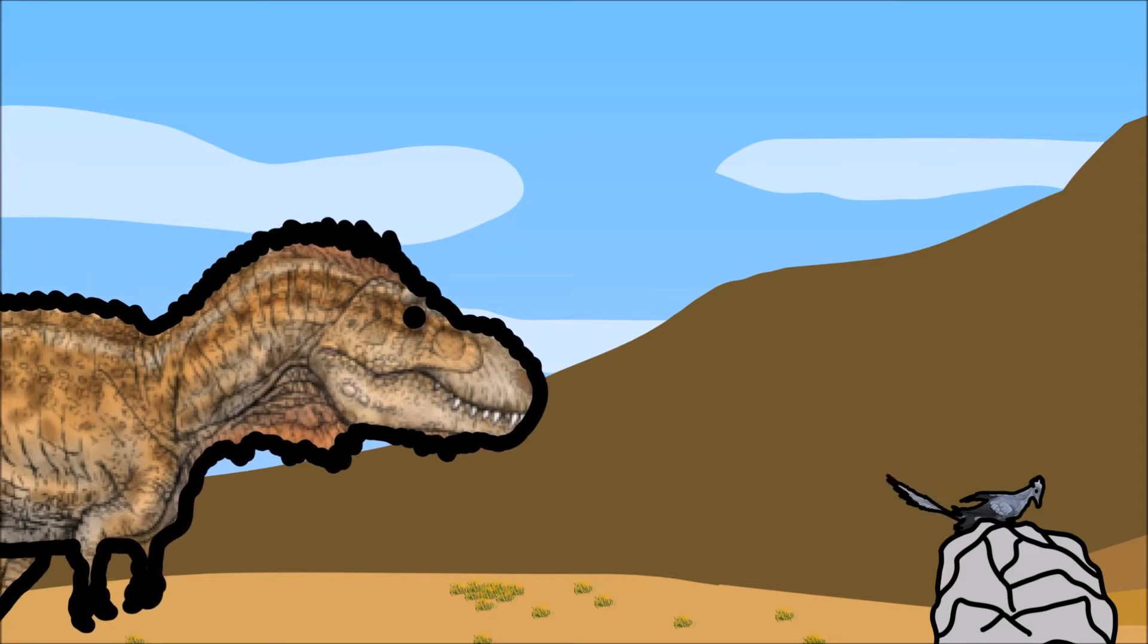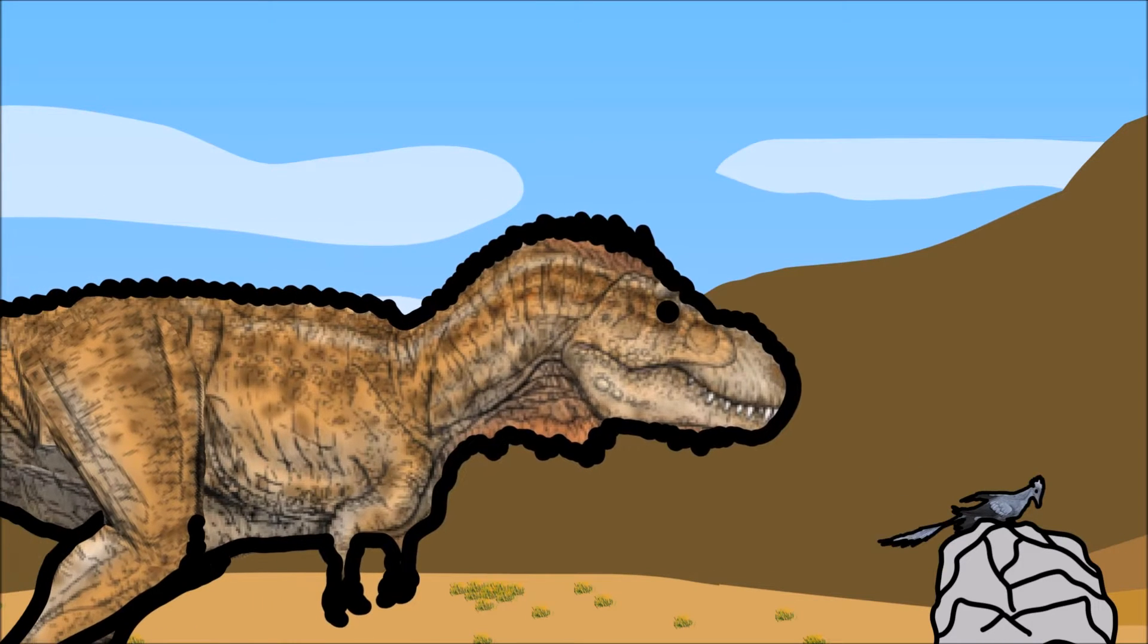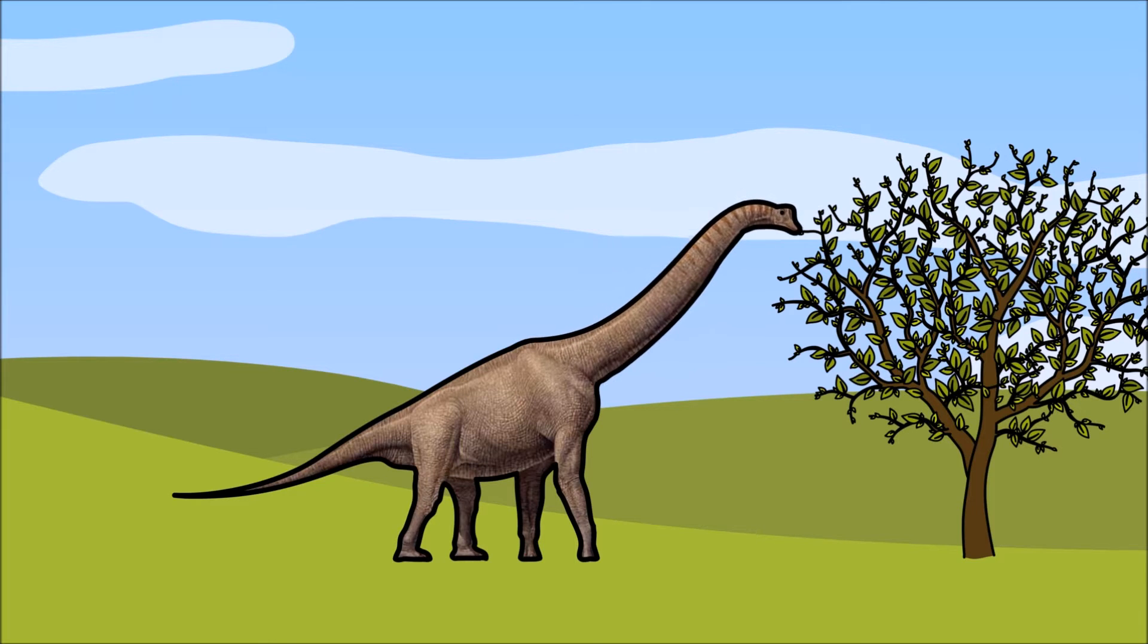Dinosaurs like the T-Rex were meat-eaters, also called carnivores. And some dinosaurs ate plants. These dinosaurs are called herbivores.